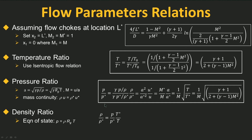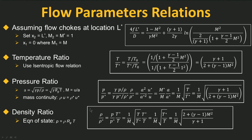Proceeding to the density ratio, we start out with rho over rho-star, look at the equation of state, and substitute in to get rho over rho-star equals (P over P-star) multiplied by (T-star over T). Using the intermediate step from the previous expression where P over P-star equals 1 over M multiplied by square root of T over T-star, we substitute that in and simplify to get rho over rho-star equals 1 over M multiplied by square root of T-star over T. Since we already have an expression for T over T-star in terms of the Mach number, it is simply a matter of substituting that in to close out the expression for rho over rho-star.